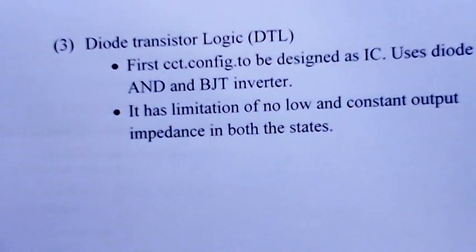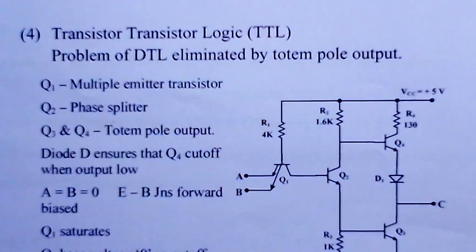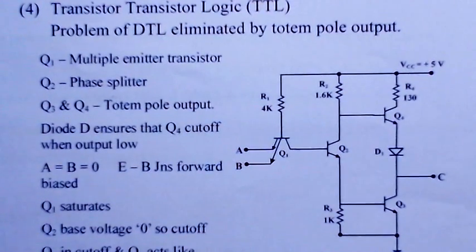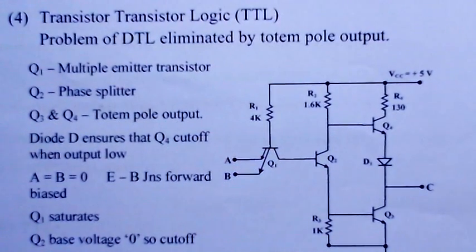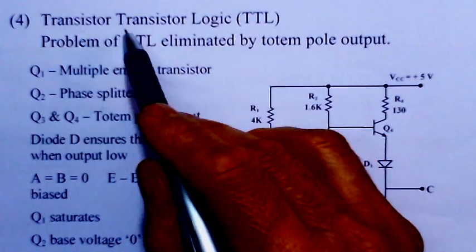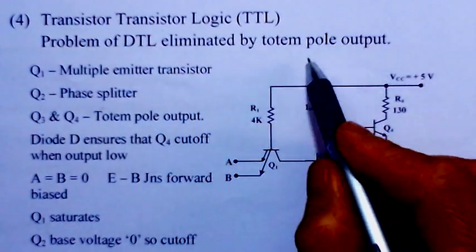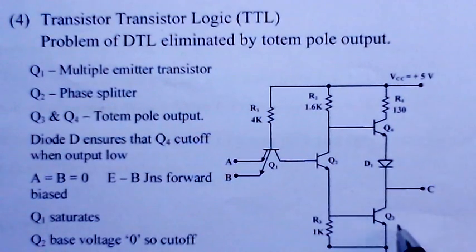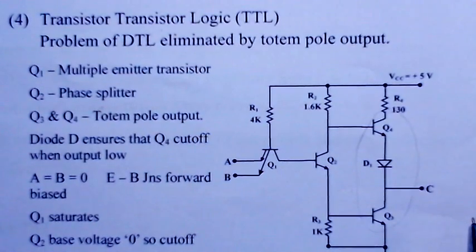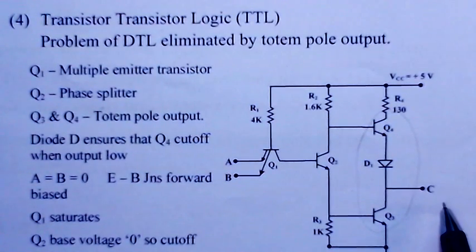Transistor-transistor logic (TTL) is the most important circuit of a logic family, evolved from DTL. The problem of DTL has been eliminated by using a totem pole output. In the totem pole arrangement, transistor Q4 sits at the top of Q3 — like the crown of some natives — and that is why it is named the totem pole connection.